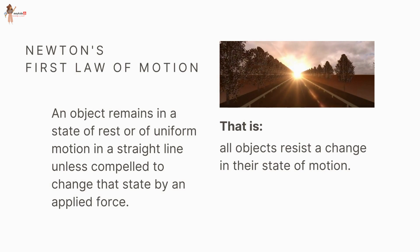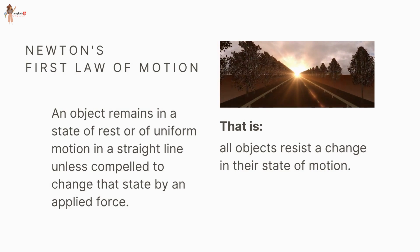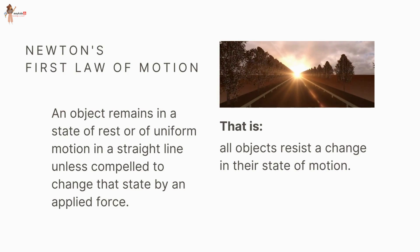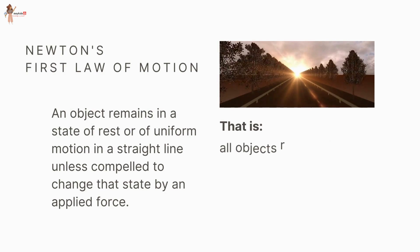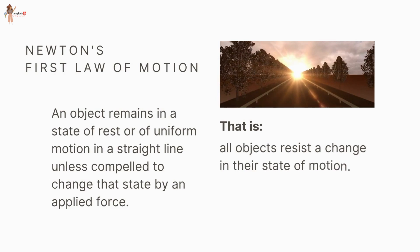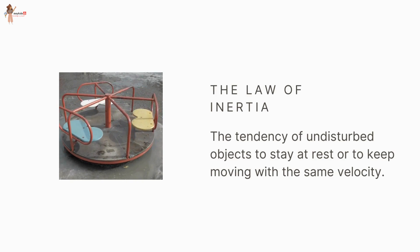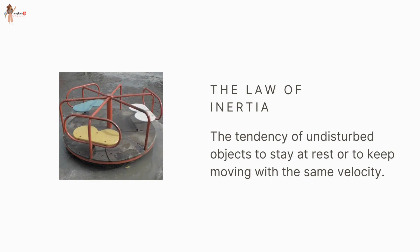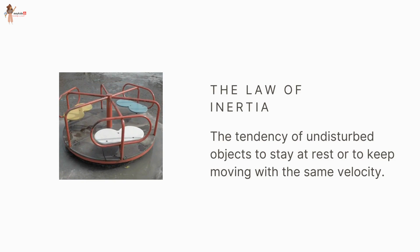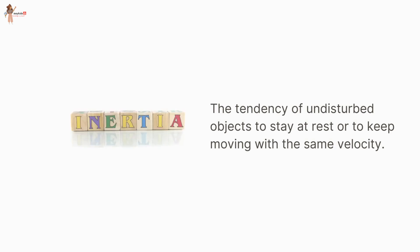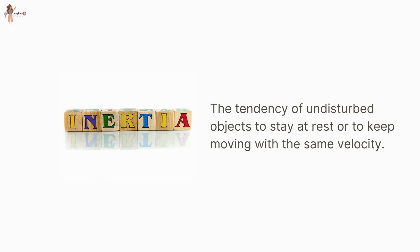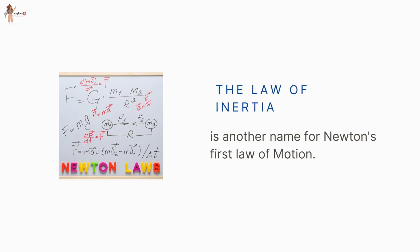The First Law of Motion is stated as: An object remains in a state of rest or of uniform motion in a straight line unless compelled to change that state by an applied force. In other words, all objects resist a change in their state of motion. The tendency of undisturbed objects to stay at rest or to keep moving with the same velocity is called inertia. This is why the First Law of Motion is also known as the Law of Inertia.